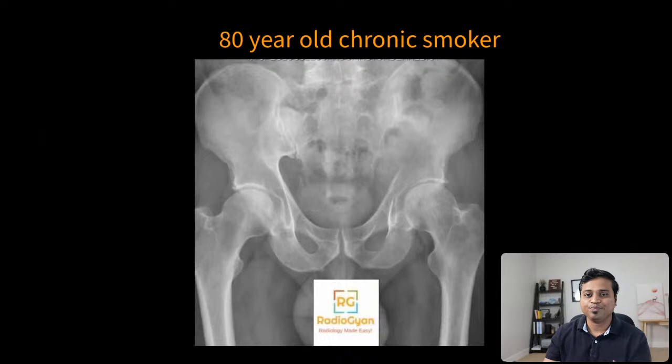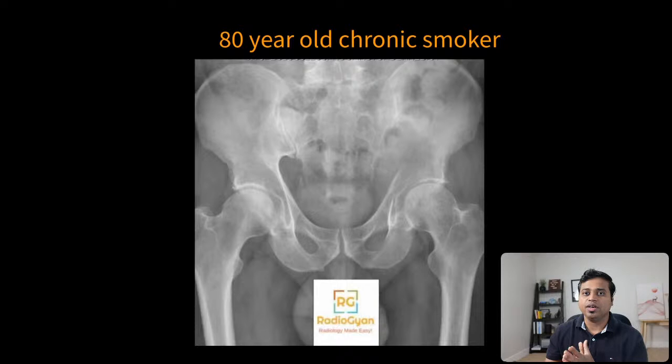Again, a very challenging case on radiograph. The history helps, but let's first try to localize the tumor. Does it involve the right innominate bone, the left innominate bone, or the femurs? Let me know in the chat.